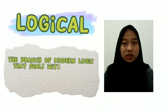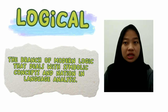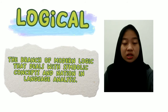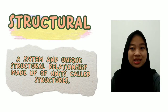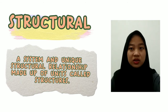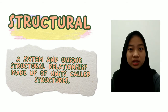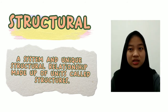The seventh is logical. Logical is the branch of modern logic that deals with symbolic concepts and notation in language analysis. The last is structural. Structural is a system — a unique structural relationship made up of units called structures. The structure is incarnated in elements in the form of phonemes, morphemes, words, phrases, clauses, sentences, and discourses, which divide them into chronological, morphological, syntactic, and research studies.